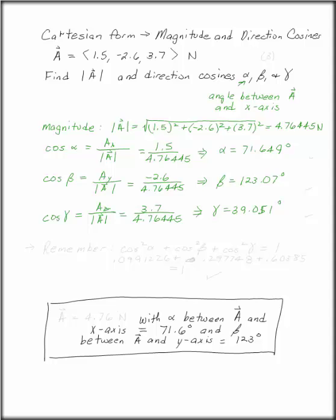Now, you can check your work, because remember, this is a very important thing to remember when you're dealing with direction cosines. Cosine squared of alpha plus cosine squared of beta plus cosine squared of gamma has got to be equal to 1.